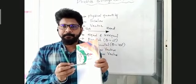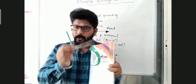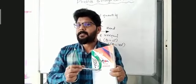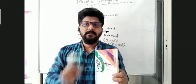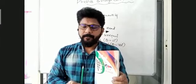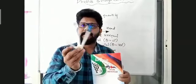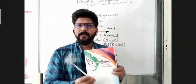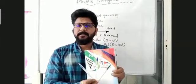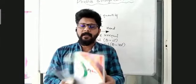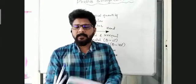Two vectors are always in the same plane. If I take three vectors and arrange them like this, they are in the same plane. If I keep them like this, they are in the same plane.